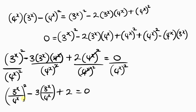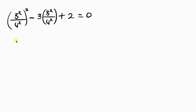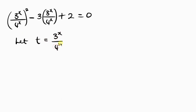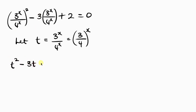We can let t equal 3 to power x over 4 to power x, which is the same as 3 over 4 all raised to power x, since they share the same exponent. Substituting t wherever we see that expression, we get: t squared minus 3t plus 2 equal to 0.